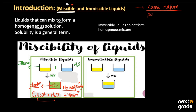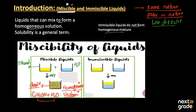Both liquids are called miscible because they have the same nature — both are polar in nature. We have already studied the guiding rule: like dissolves like, meaning the polar will get dissolved into the polar.